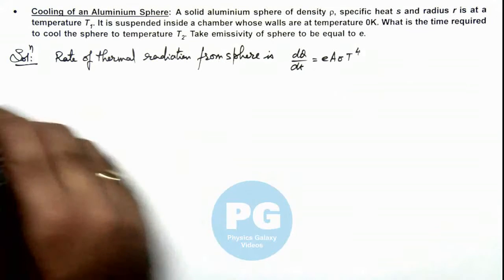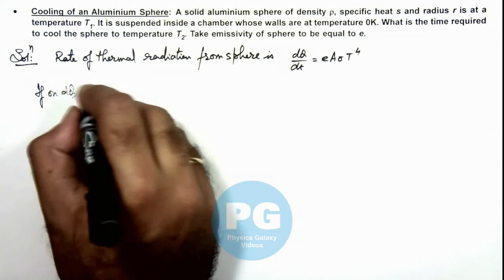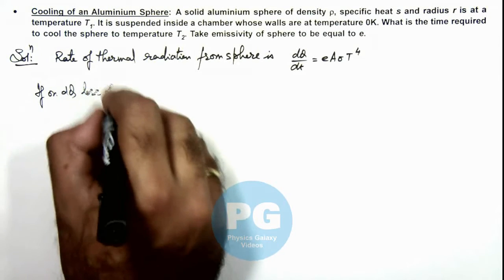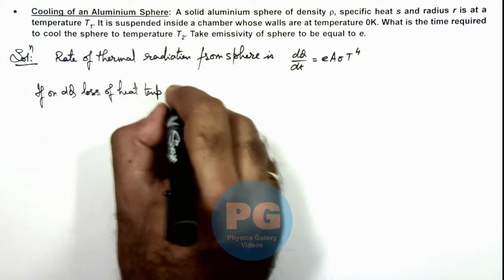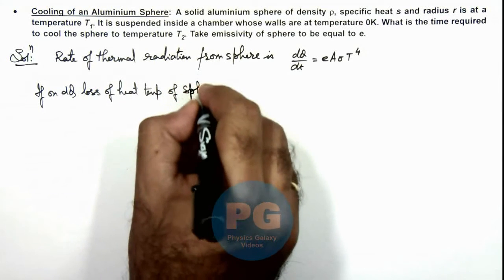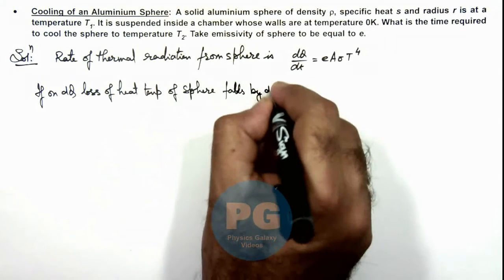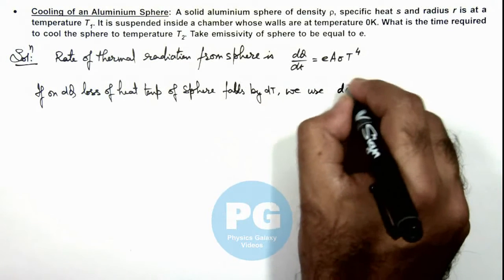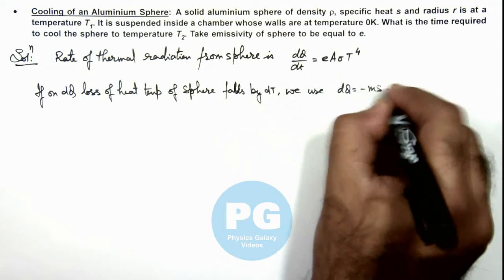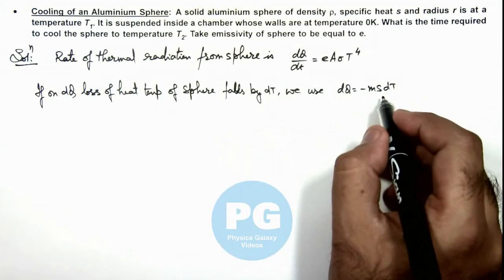If on dQ loss of heat, temperature of sphere falls by dT, here we use dQ is equal to minus ms dT. Here the negative sign indicates the temperature is falling down.